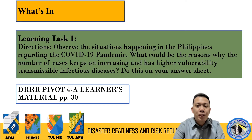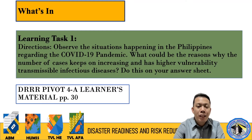It is very timely because it was just announced this afternoon that Lucena City as well as the entire Quezon province and other provinces here in Calabarzon are either under MECQ or GCQ. In our case in Quezon and in Lucena City, we are under GCQ. We have an increasing number of COVID-19 positives not only here in Quezon province but in the entire Philippines. So what are the possible reasons why we have higher vulnerability?